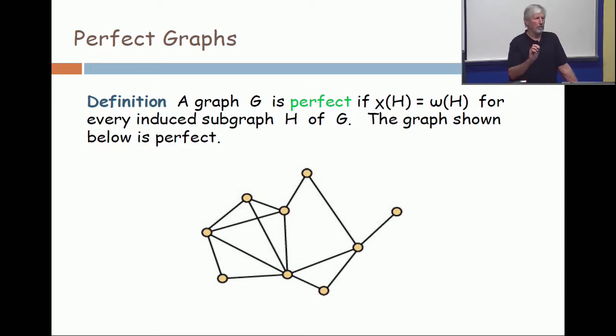No. You have to check every induced subgraph. There's nine vertices. How many induced subgraphs are there? Counting the empty subgraph, there's two to the nine. As many subsets as there are of the nine element set.